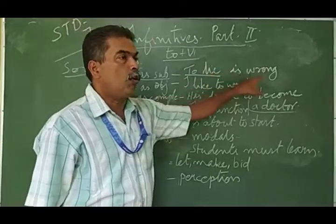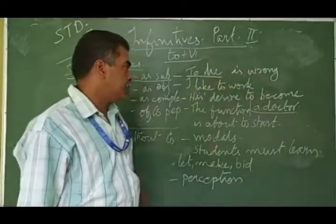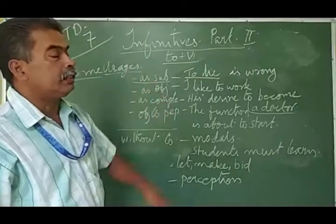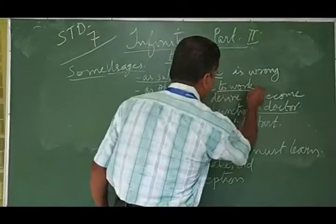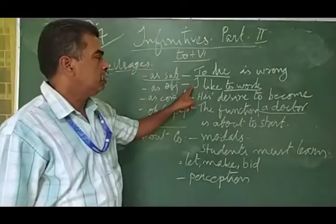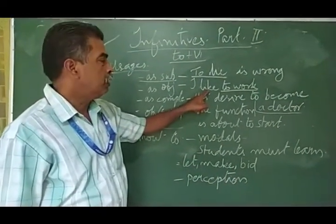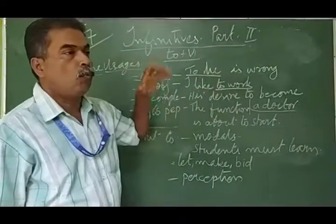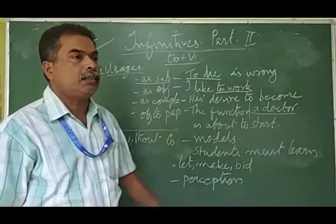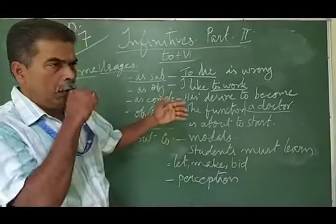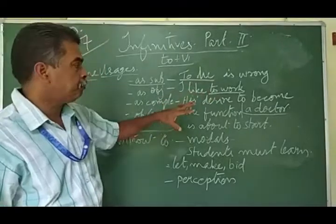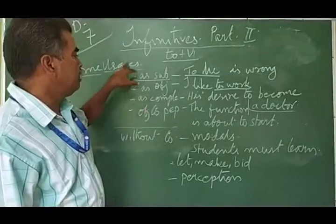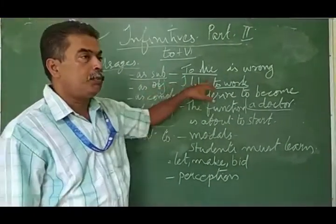Next one is as object in a sentence. I like to work. I is the subject, like is the verb, and as an object to this verb, to work. What do I like? To work, to rest, to study, to travel. So infinitives can be used as the object in the sentence.